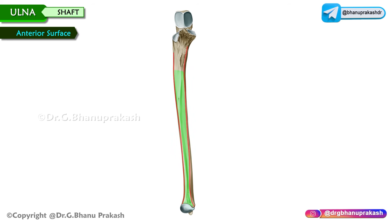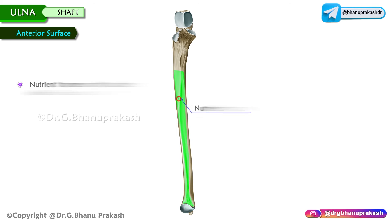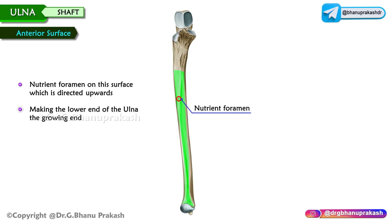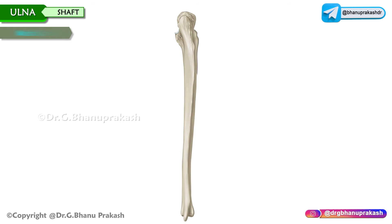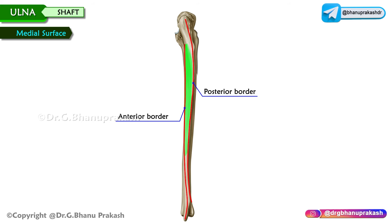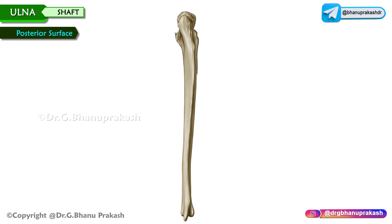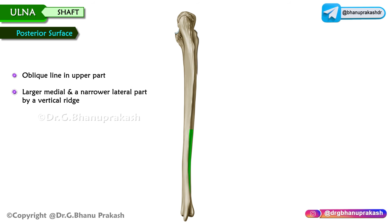The anterior surface lies between the anterior and interosseous borders. There is a nutrient foramen on this surface directed upwards, making the lower end of the ulna the growing end. The medial surface lies between the anterior and posterior borders and is convex. The posterior surface lies between the posterior and interosseous borders and presents an oblique line in its upper part. Below the oblique line, the surface is divided into a larger medial and a narrower lateral part by a vertical ridge.